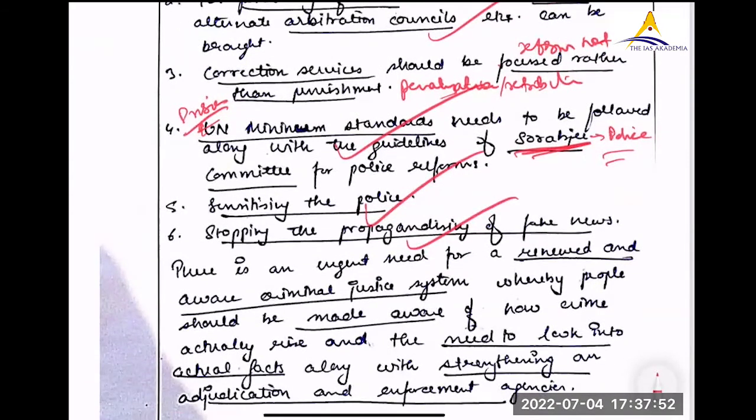See UN minimum standards are for prison. I think you have read our criminal justice system pdf. So you mixed them. But at least you remember that is very good. Sourabji committee is for police. Sensitizing the police. Stopping the propaganda. Fake news. There is a need for renewed and aware criminal justice system. Now this much of time you will get only half marks at best for your conclusion. You need to look into actual facts along with is it conclusion or are you justifying a part of your body?